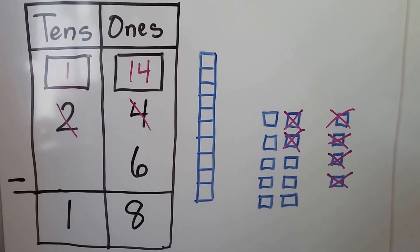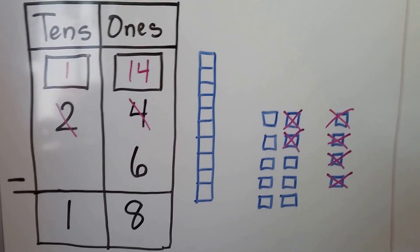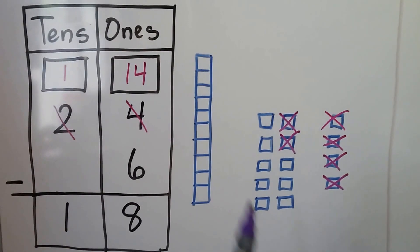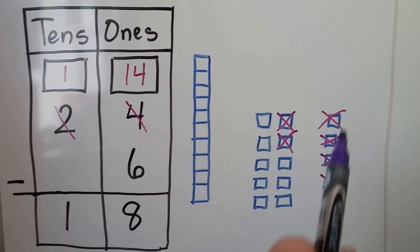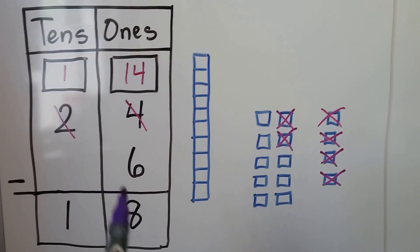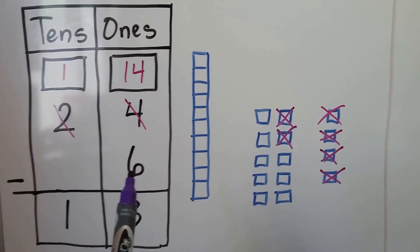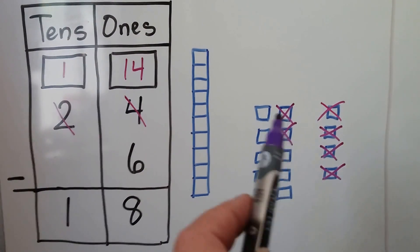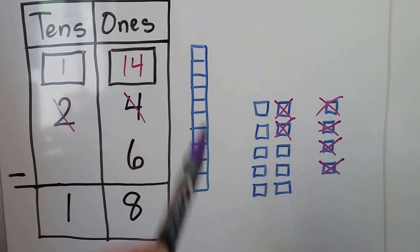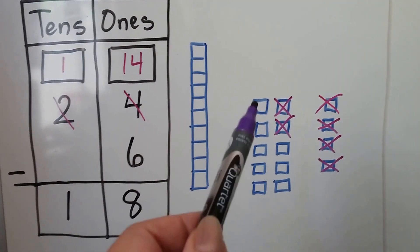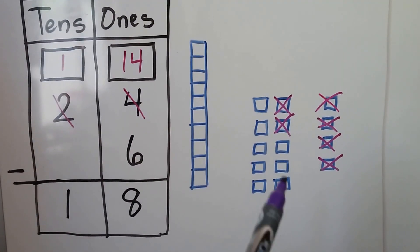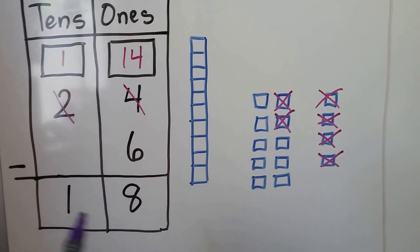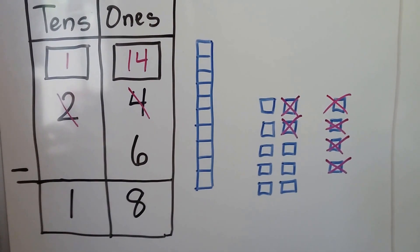Here we have 24 minus 6. We have 10, 20, 4. We're going to take away 6. We cross off 6 ones. That leaves one ten and eight ones.